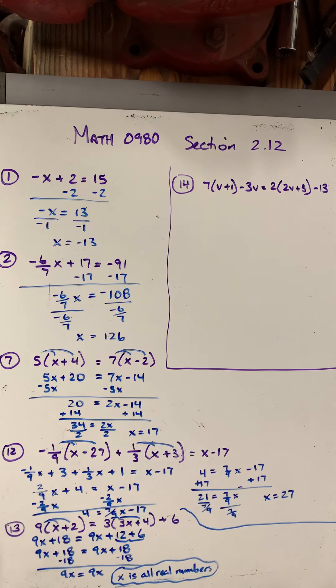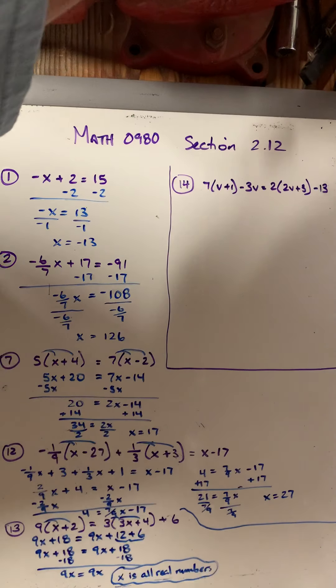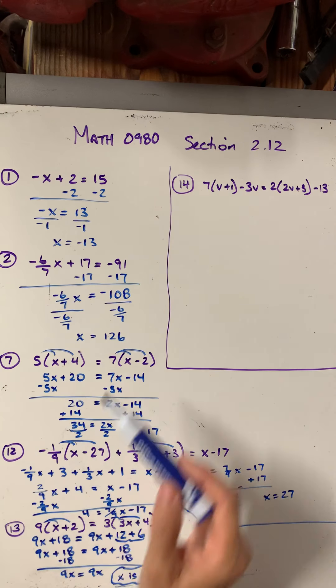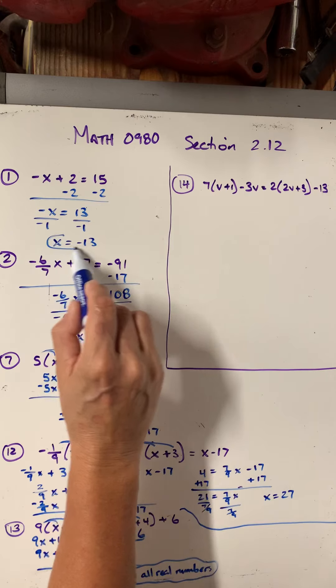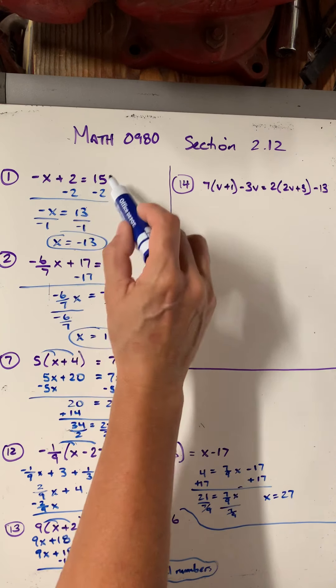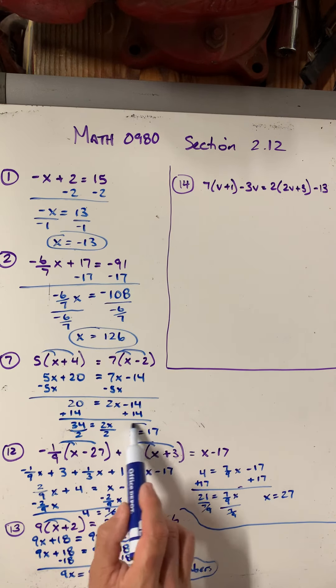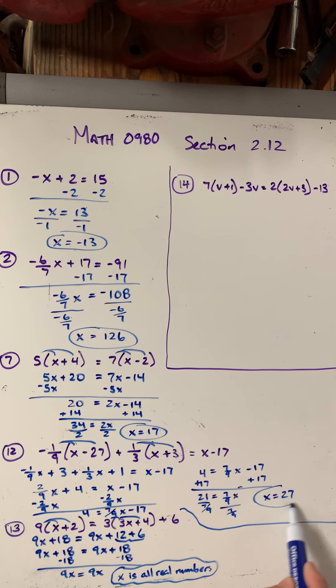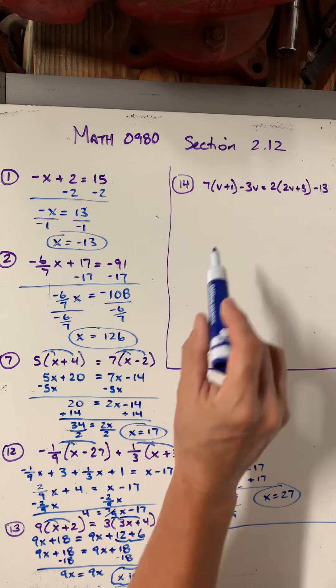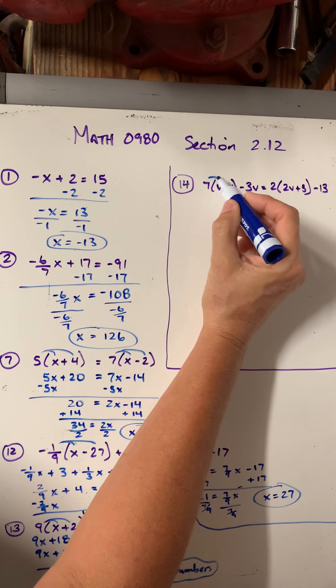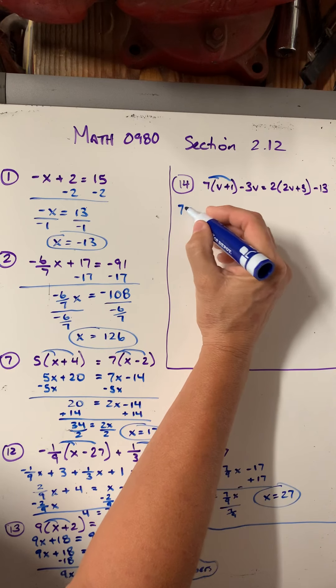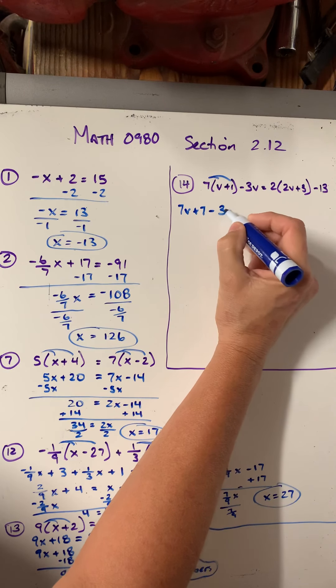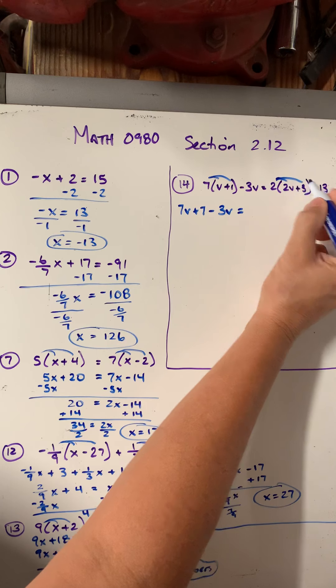Let's look at 14, which is the other example of what could happen. So all these other questions, we got a single number that made the equation work. There was just a single answer. And so we would put that in as a single solution. Then all of a sudden we get to question 13, and any number would make the left and the right equal. So now let's see what happens with question 14. So I'm going to go ahead and distribute.